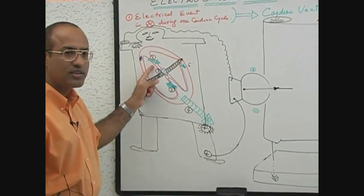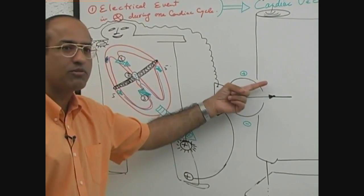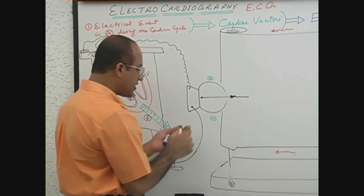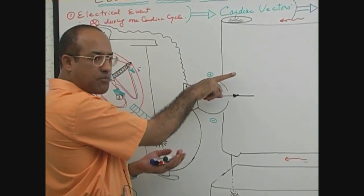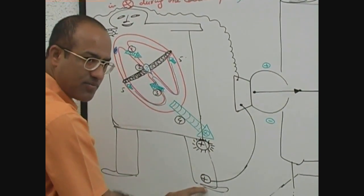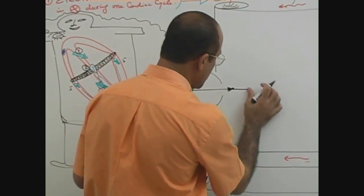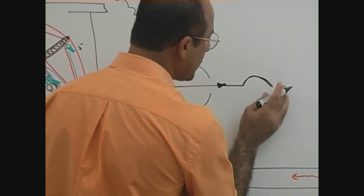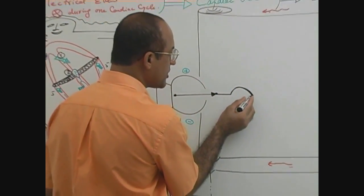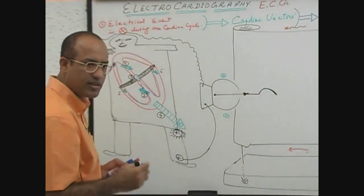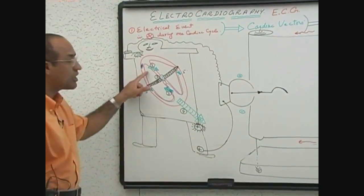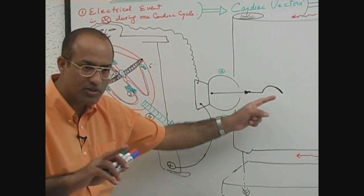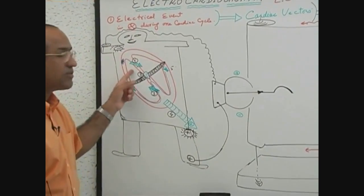The atrial vector moves at moderate velocity, so the needle will go upward positively with moderate speed — not fast. As the paper moves under it, during atrial depolarization the needle gradually lifts upward, generating a wave on the paper. This wave represents atrial depolarization. It is a slow, small deflection because the atrial vector is a small one.